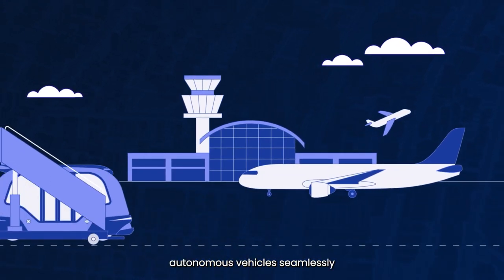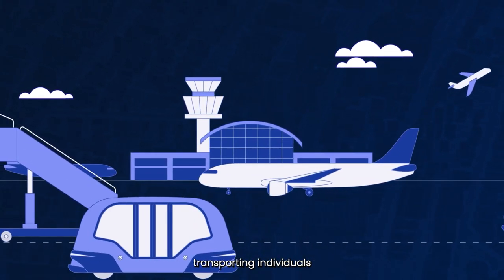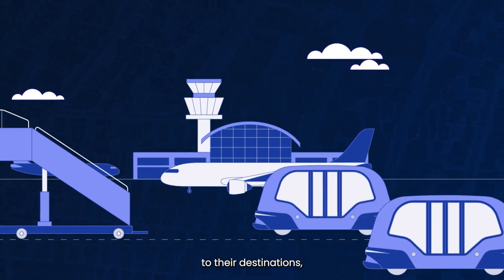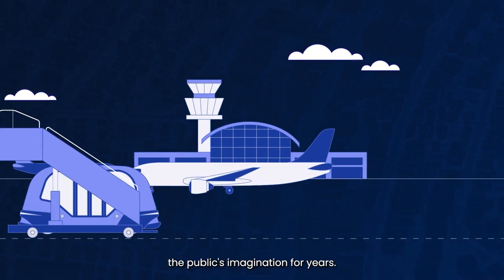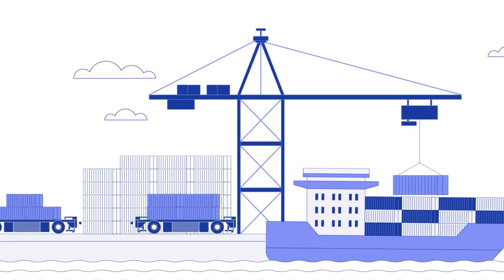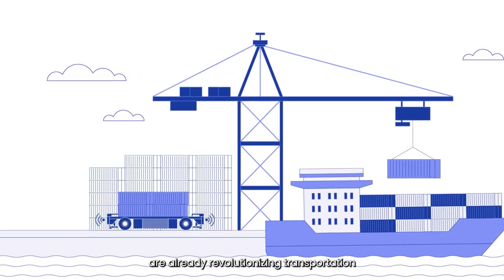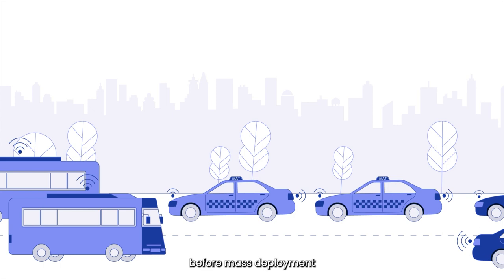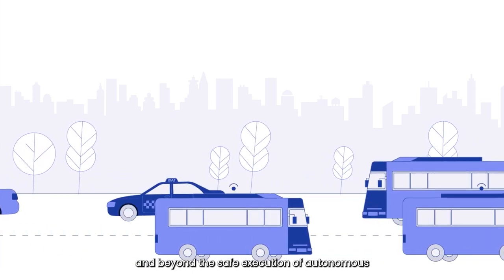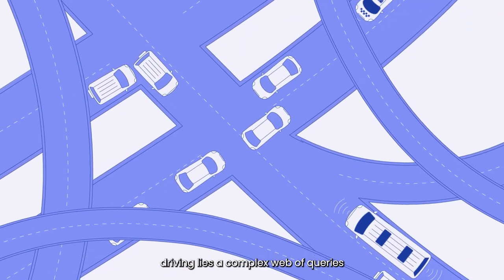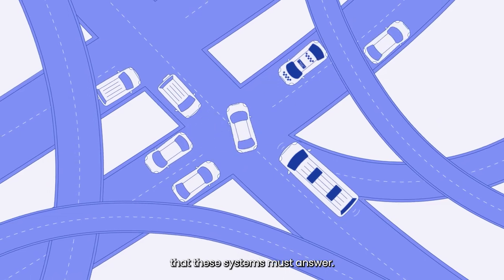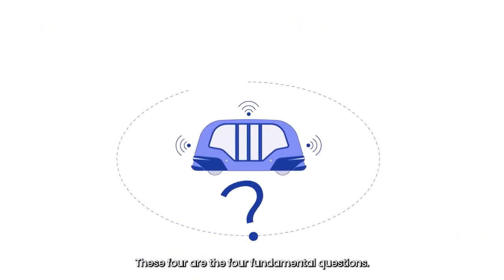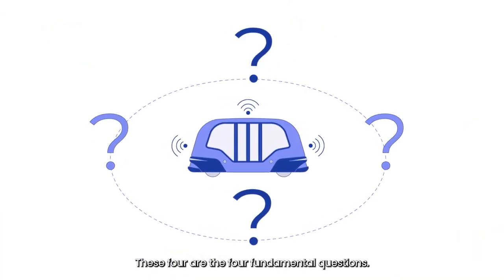The vision of fleets of autonomous vehicles seamlessly transporting individuals to their destinations has captivated the public's imagination for years. Autonomous vehicles are already revolutionizing transportation. Before mass deployment and beyond the safe execution of autonomous driving lies a complex web of queries that these systems must answer. These are the four fundamental questions.